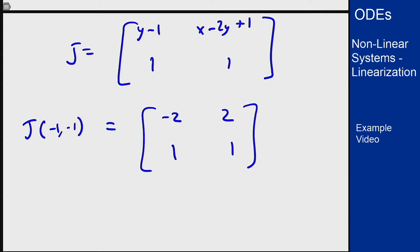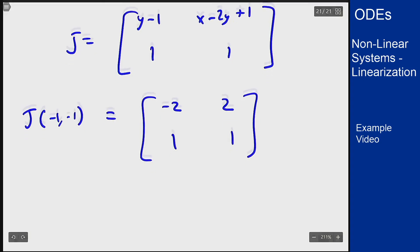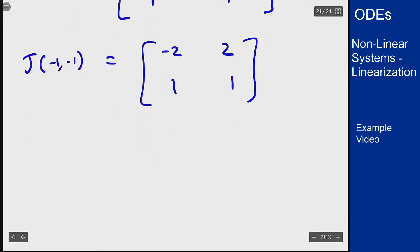To classify we want to find the eigenvalues. We can find the eigenvectors too but that's not really necessary to classify here. We find the determinant and we end up with -2 minus lambda times 1 minus lambda minus 2 for the off diagonal. Expanding this out I see lambda squared.